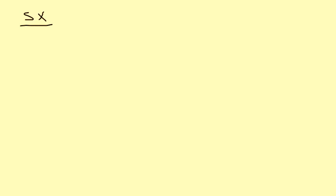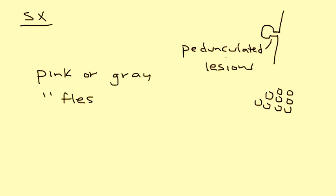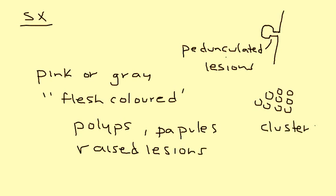What are the symptoms? What does this appear like? Basically, these are lesions that, looking at them from the side, are attached by a stalk and are known as pedunculated lesions. If you look at them from the front, they appear as clusters. They're known to be various colors such as pink, gray, or flesh-colored, and are described as polyps, papules, or raised lesions. They're also commonly referred to as cauliflower-like lesions.